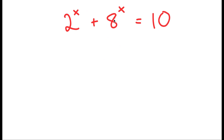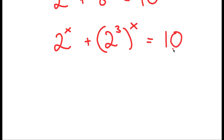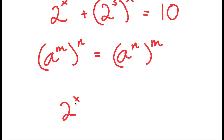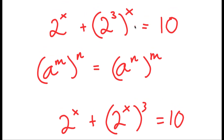To solve this, I'm going to first start by rewriting 8 as 2 to the power of 3. So I get 2 to the power of 3 to the power of x is equal to 10. Now, if I have something in the form a to the power of m to the power of n, this is equal to a to the power of n to the power of m. So I get 2 to the power of x plus 2 to the power of x to the power of 3 is equal to 10, because I switched the places of 3 and x.